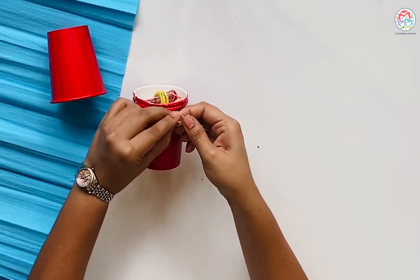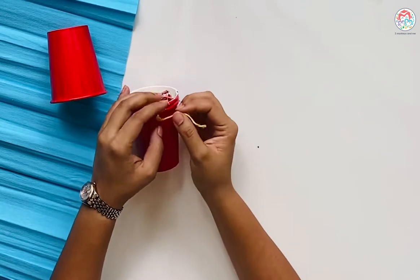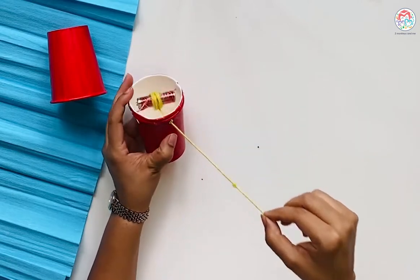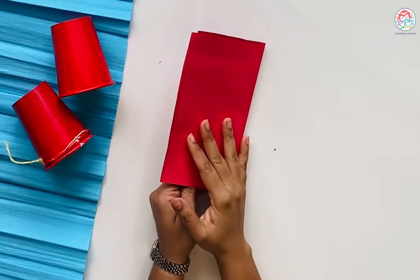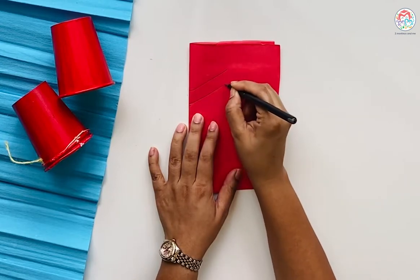So that your rope doesn't come out completely, pull it and tie a knot with something hanging out. When you pull it and release it, it won't go right through. Take a red piece of paper, fold it in half, and draw your crab claws.